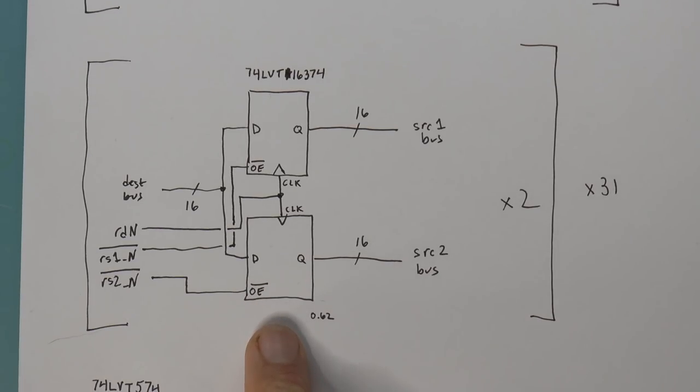So at first glance, this looks a lot better than the previous architecture because we're only using two chips rather than three. Of course, remember that you have to multiply this by 2 in order to get all 32 bits, so that means that you would have four chips rather than six chips. And that might add up because again you have to multiply by 31 for the number of registers.